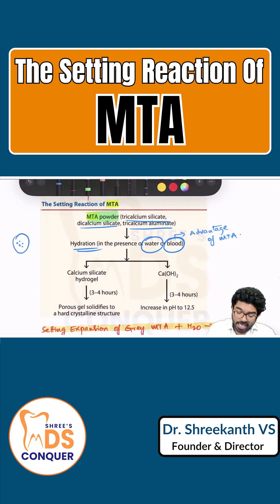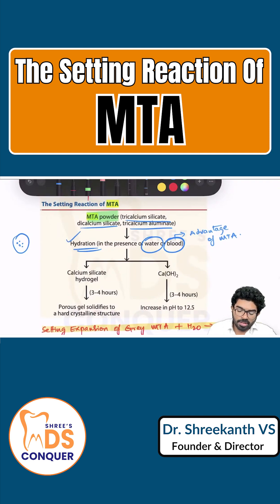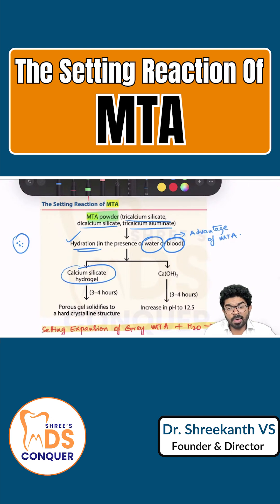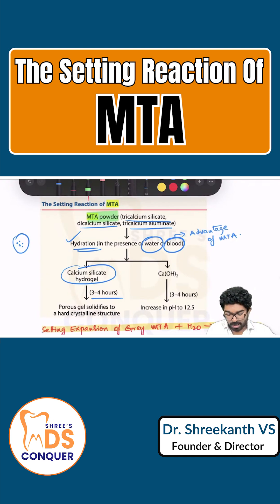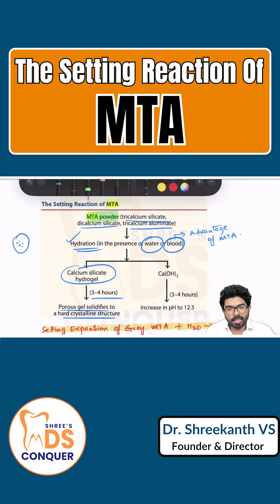The hydration reaction is very, very important in MTA. With calcium silicate, it forms a calcium silico hydrogel after approximately three to four hours — around 165 minutes or more. This porous gel initially solidifies into a hard crystalline structure, which becomes very tough.